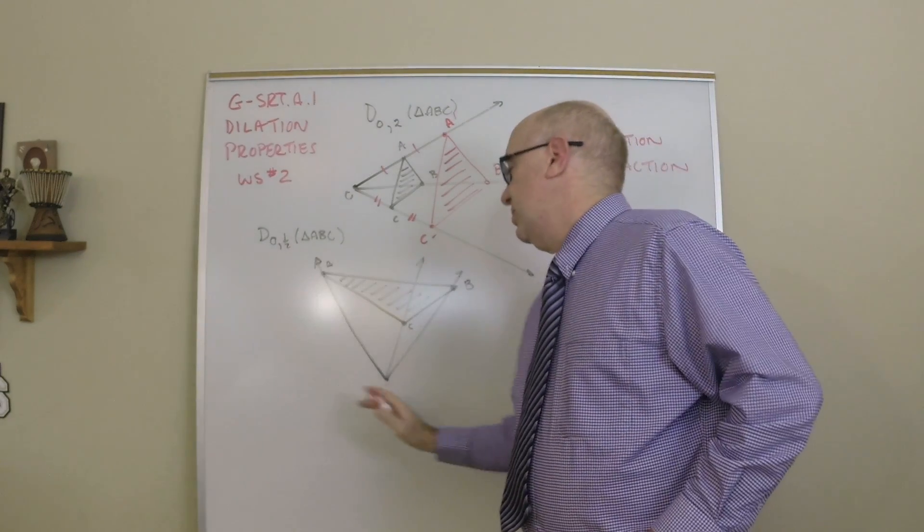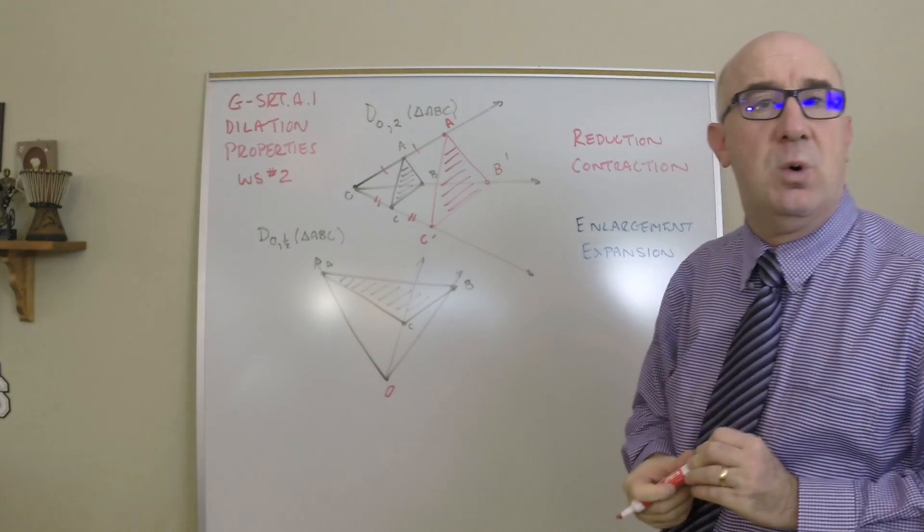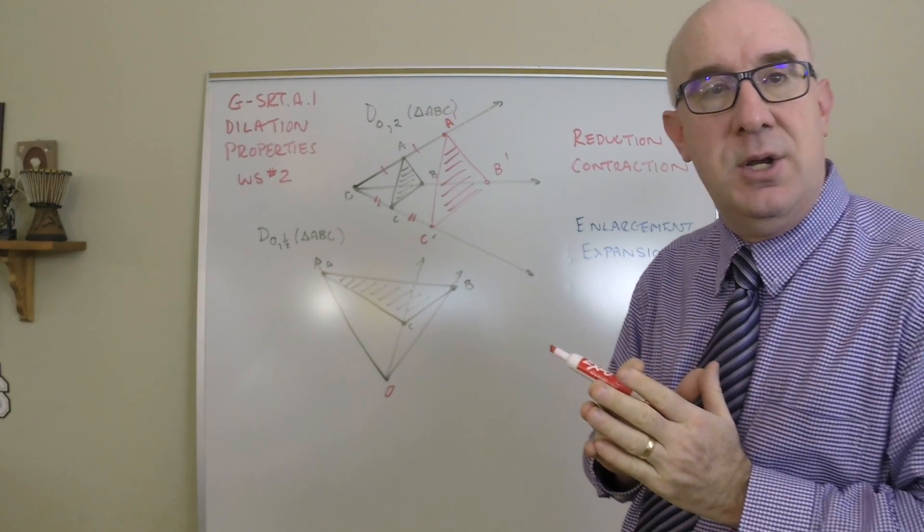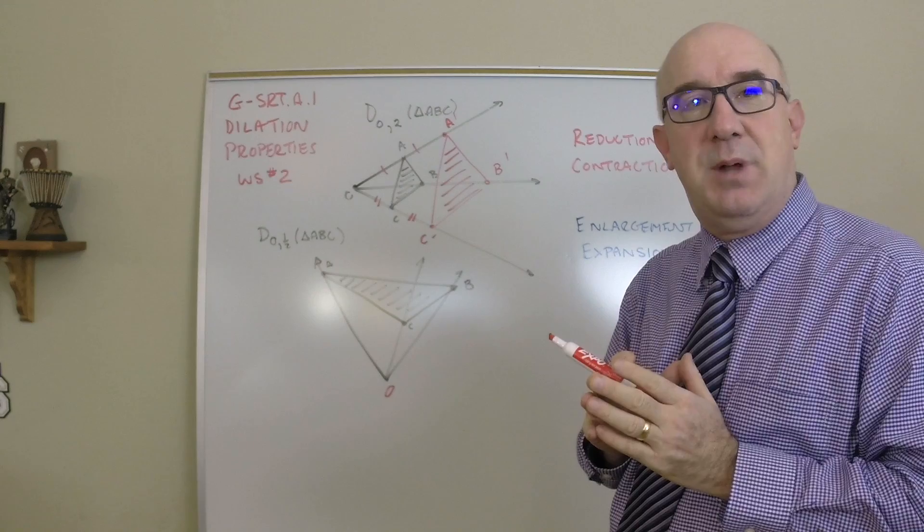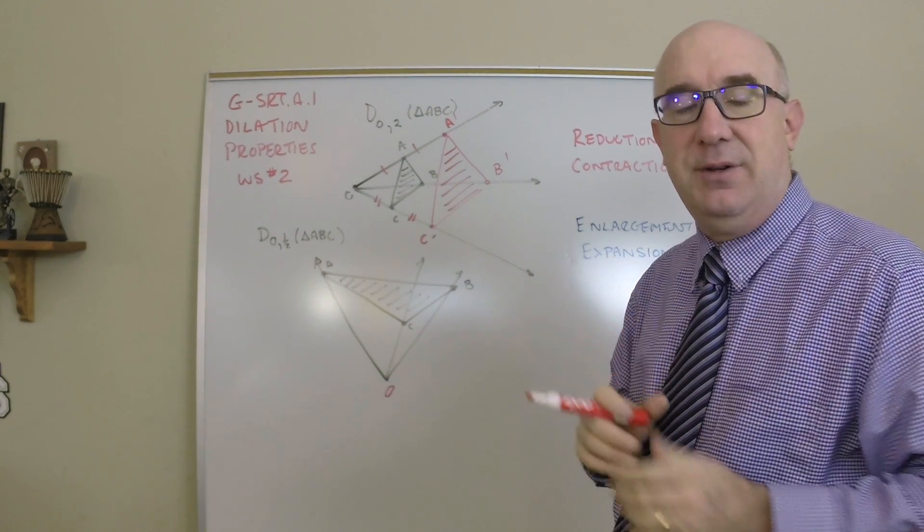Here, we're going to dilate by our point O here, a half. And so, this time, if you multiply something by a half, you get half the size. So we're now learning that if you multiply between 0 and 1, between those values, you will be a reduction.